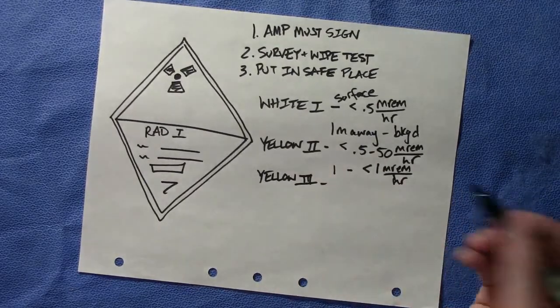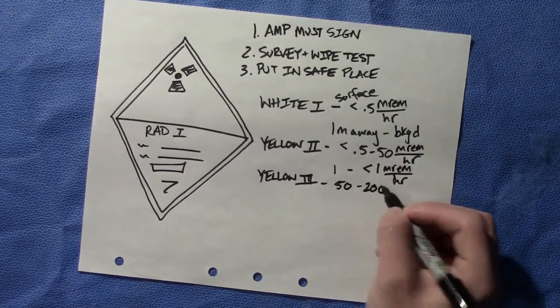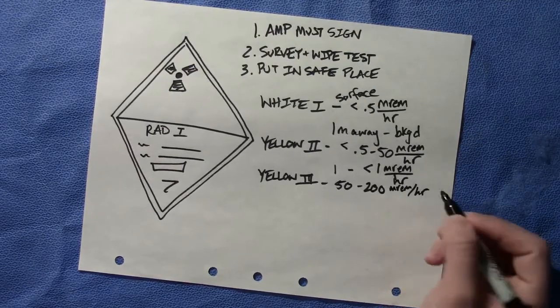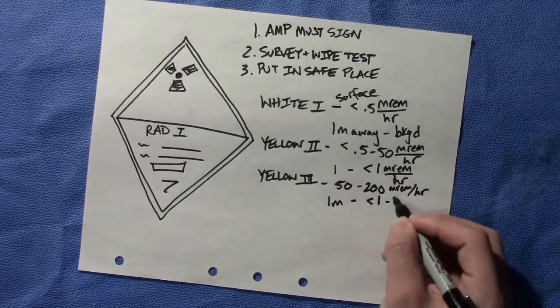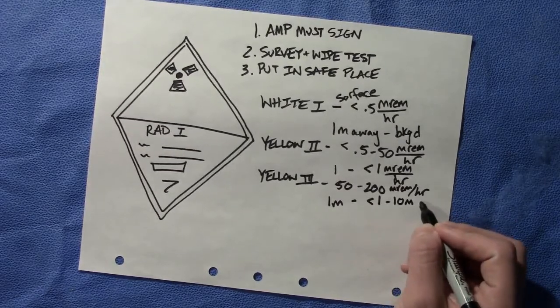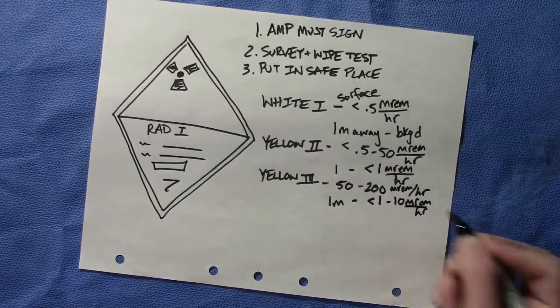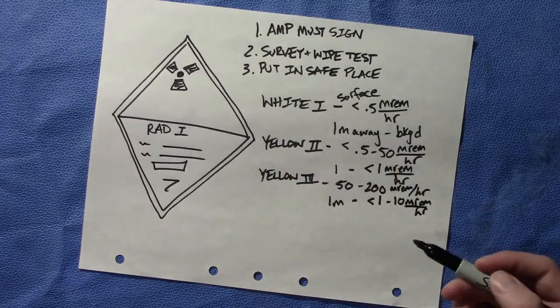Yellow III has the same tests. Surface should not exceed 50 to 200 millirem per hour, and at one meter away, it should not exceed 1 to 10 millirem per hour. Those are the three designations, and they determine the caution in handling the material.